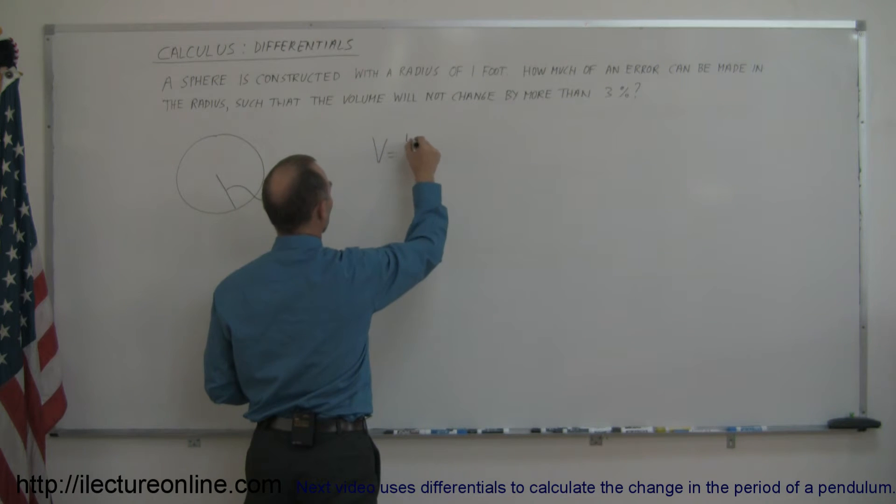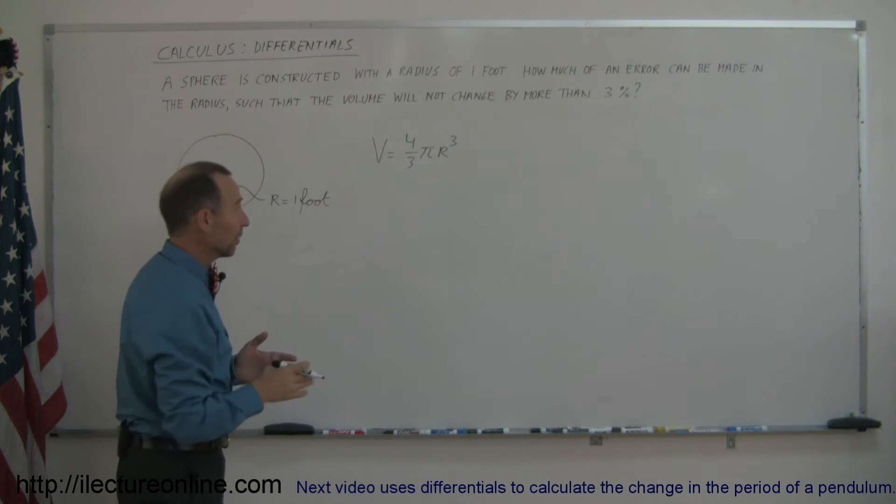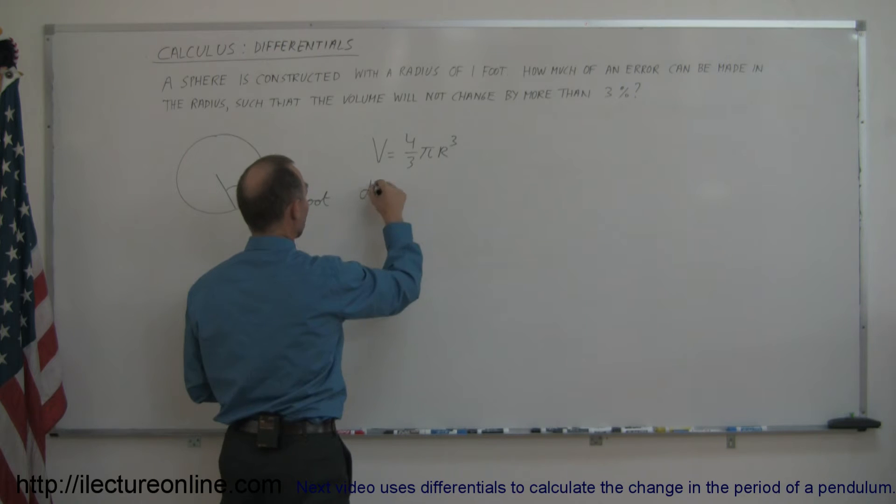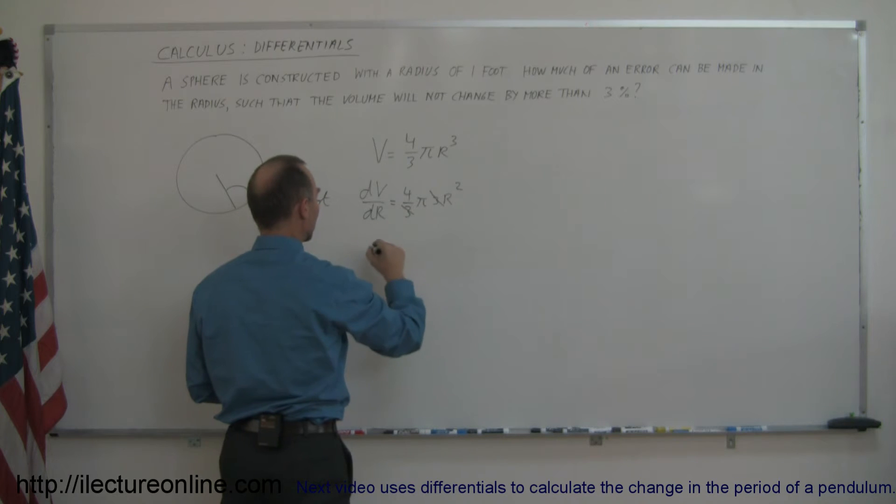The volume is equal to 4 thirds pi r cubed and so let's now find the derivative of the volume with respect to r. So dv/dr is equal to 4 thirds pi times the derivative of r cubed which is 3r squared, and then this 3 cancels with that 3 and we get dv/dr is equal to 4 pi r squared.